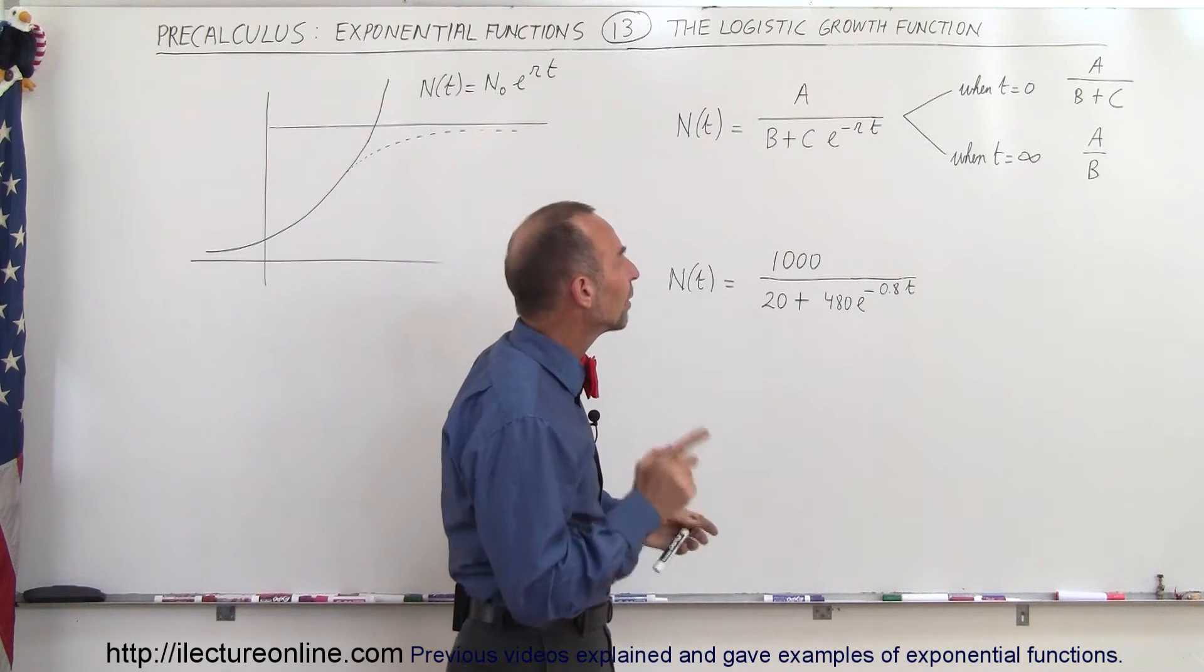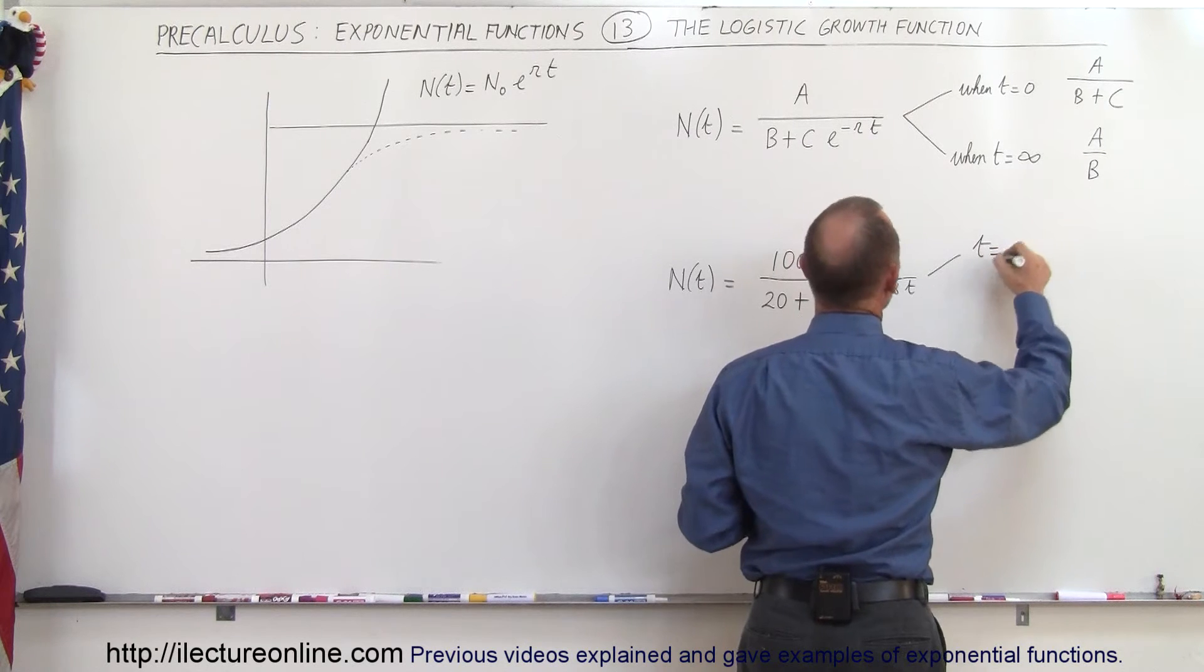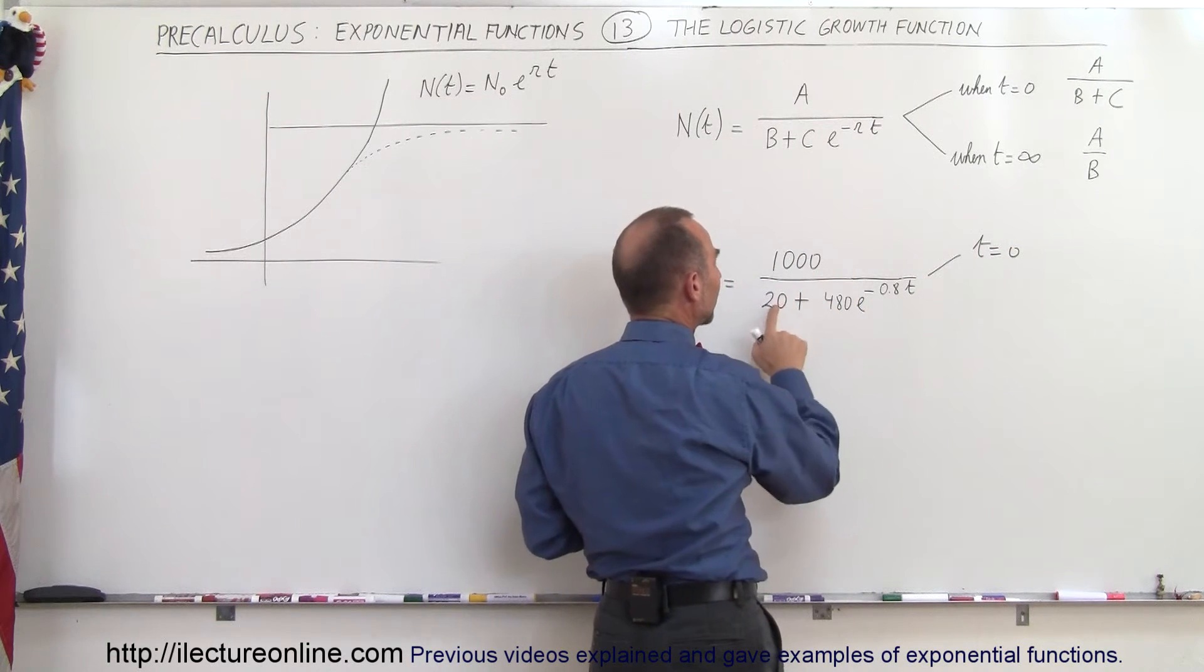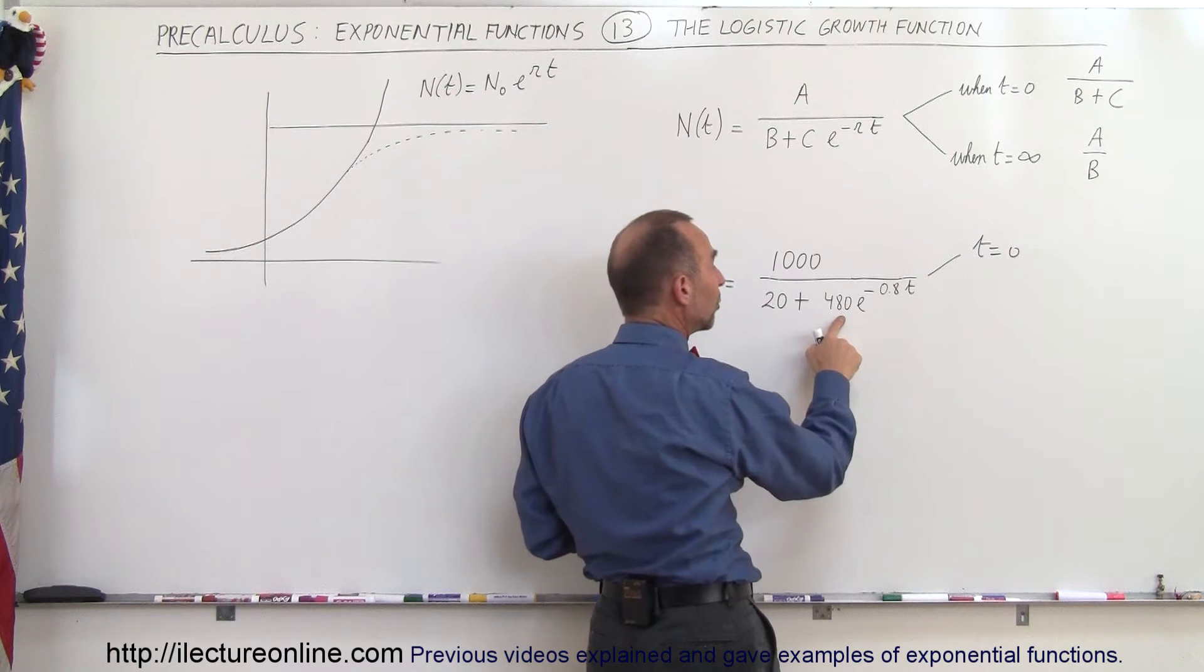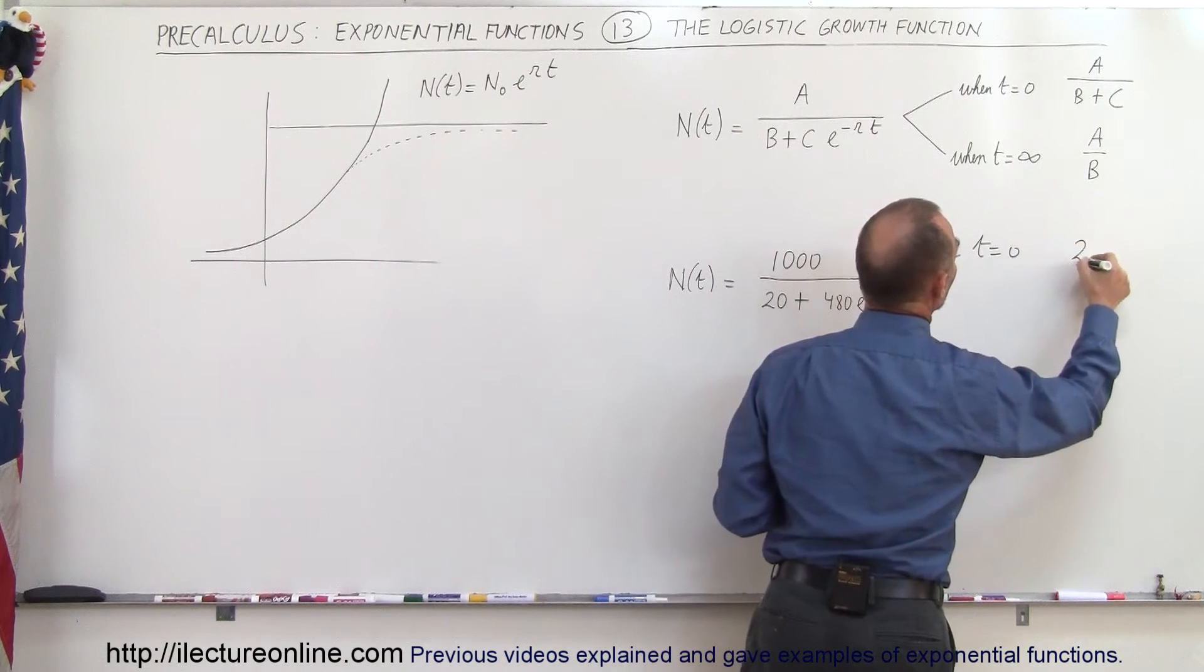Well notice what happens when t is equal to 0. So when t is equal to 0, e to the 0 power is equal to 1, 1000 divided by 20 plus 480, which means 1000 divided by 500, that means the function becomes equal to 2.